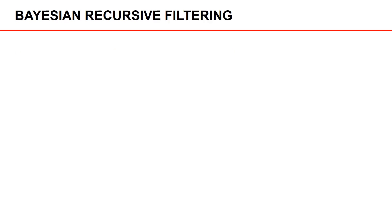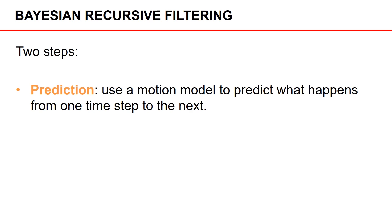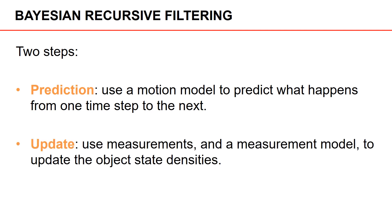In Bayesian recursive filtering, there are two steps. The first step is the prediction, where we use the motion model to predict what happens from one time step to the next—how does the object state evolve over time? The second step is the update step, where we use measurements and the measurement model to update the object state densities.